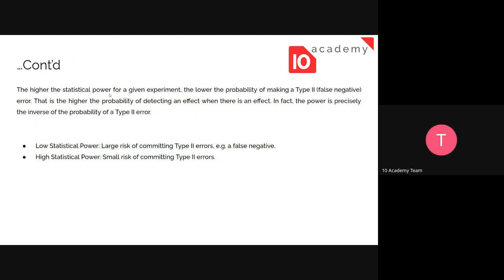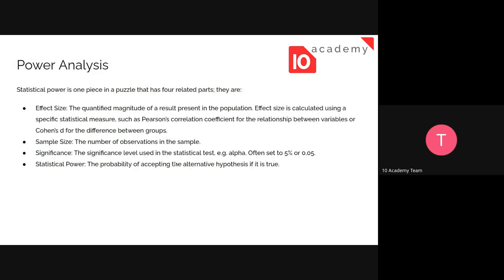The higher the statistical power for a given experiment, the lower the probability of making a Type 2 false negative error — that is, the higher the probability of detecting an effect when there is an effect. In fact, power is precisely the inverse of the probability of Type 2 error. To summarize: low statistical power means a large risk of committing Type 2 error, and high statistical power means a small risk of committing Type 2 error.